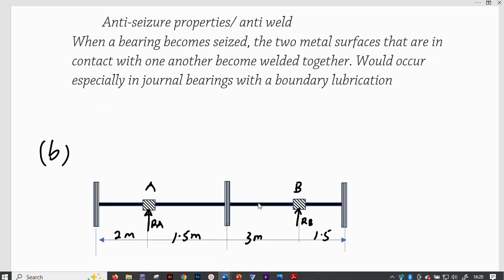Then the material should also possess antiseizure properties or anti-weld because when a bearing becomes acidic, usually the two metal surfaces that are in contact with one another become welded together. So this would occur, especially in journal bearings, with boundary lubrication. Of course, you need to do better lubrication.